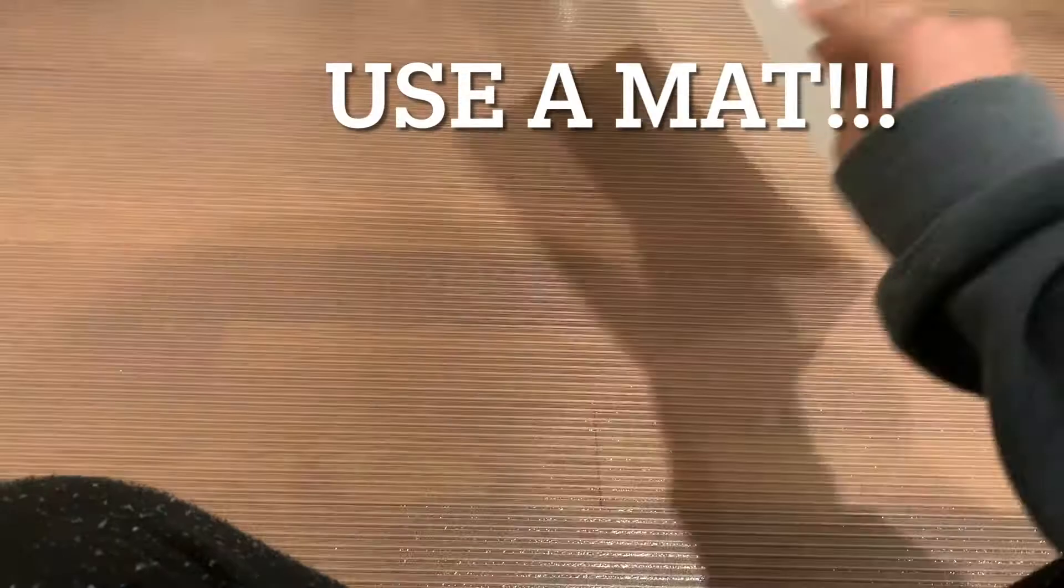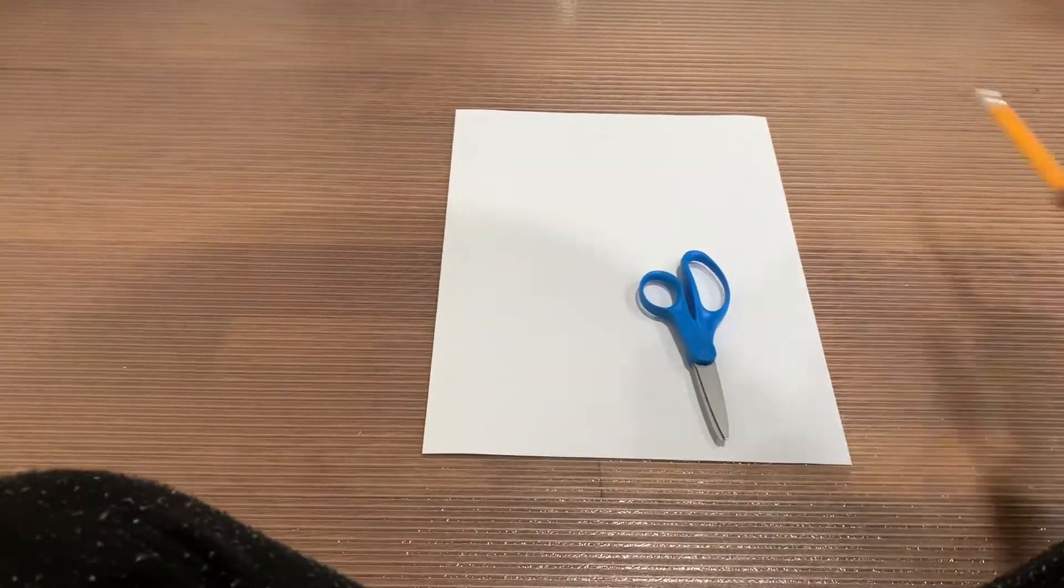Okay, let's get started. All you need to make one paper rose is a sheet of any size, any color paper you want, scissors, a pencil, and glue.